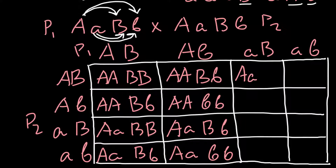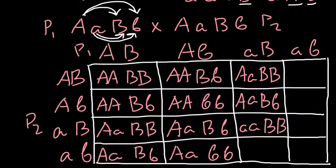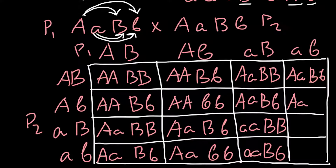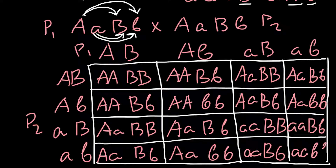Continuing to fill the remaining cells: small a small a capital B capital B; small a small a capital B small b; small a small a capital B small b; small a small a small b small b; small a small a small b small b; small a small a small b small b; small a small a small b small b. Let's return to our problem.